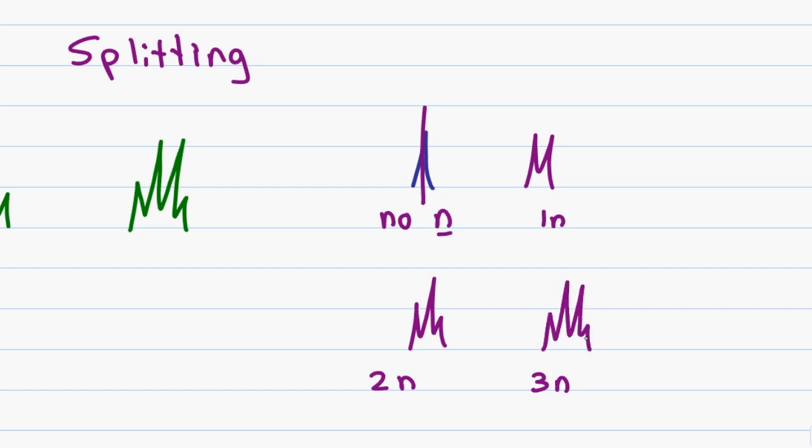The mathematical way of solving this is using the rule of N plus 1 where N stands for the number of neighbors plus 1 for the original peak. Therefore, I can simply look at the peak on my graph, count the number of tips that I see, subtract 1, so it'll be tips minus 1 and that will give me the number of types of hydrogen neighbors.